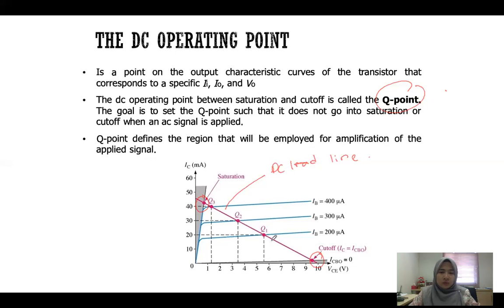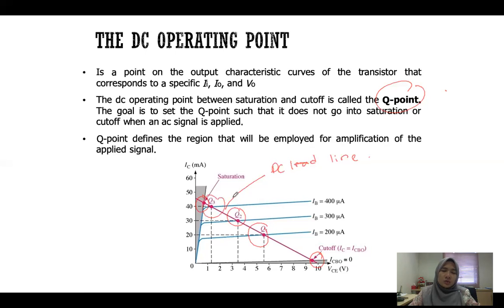There are three Q points shown, based on three different base currents: Q point one, Q point two, and Q point three. This is the DC operating point.